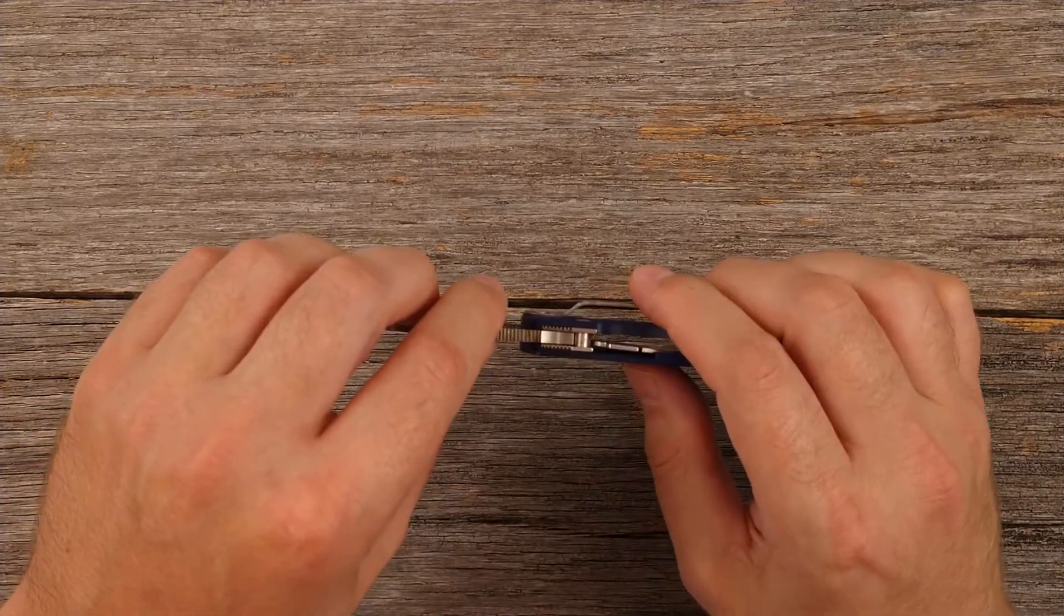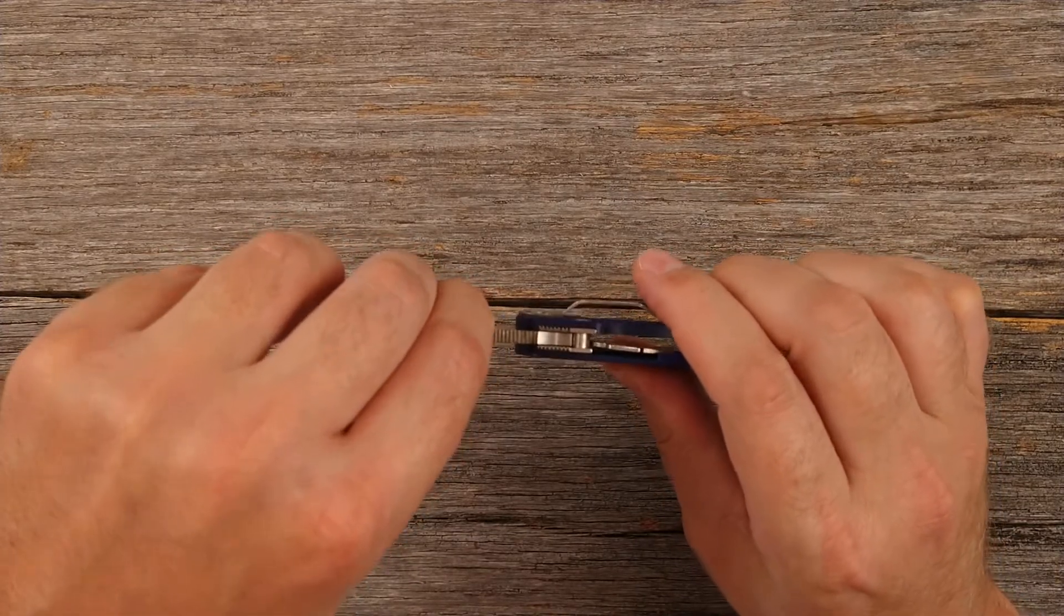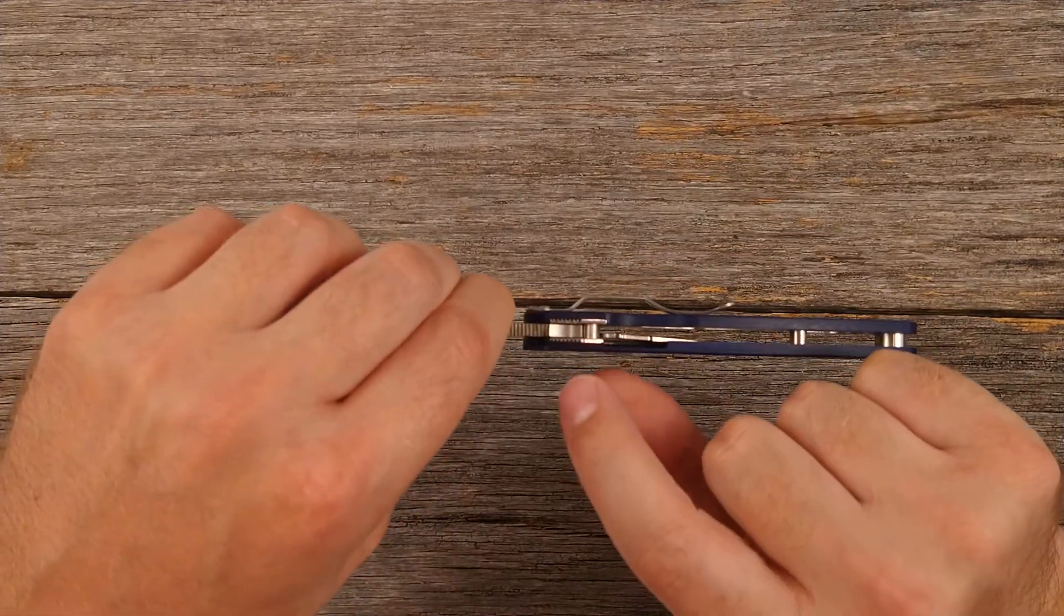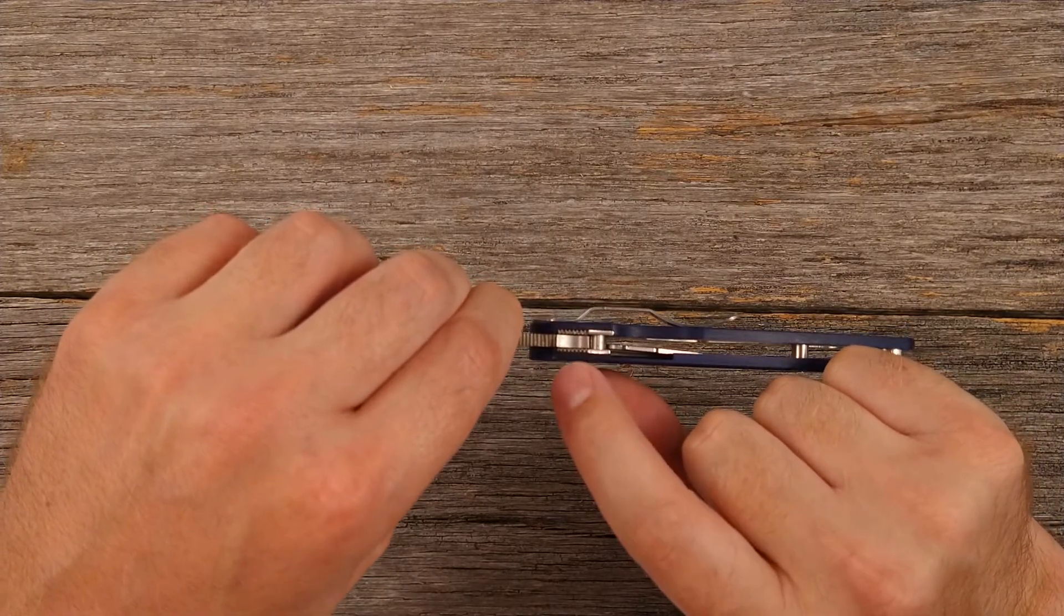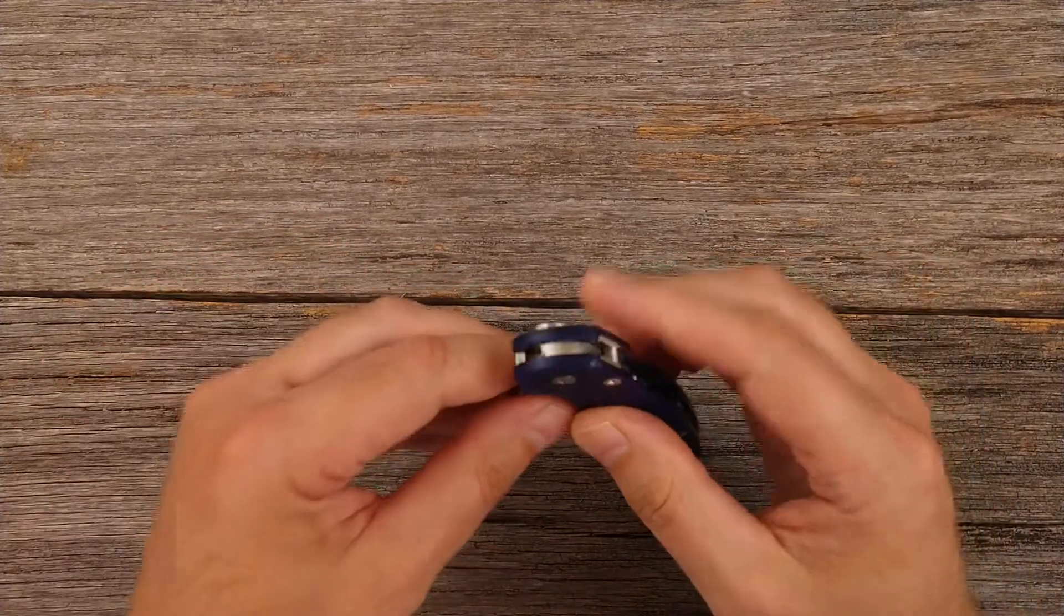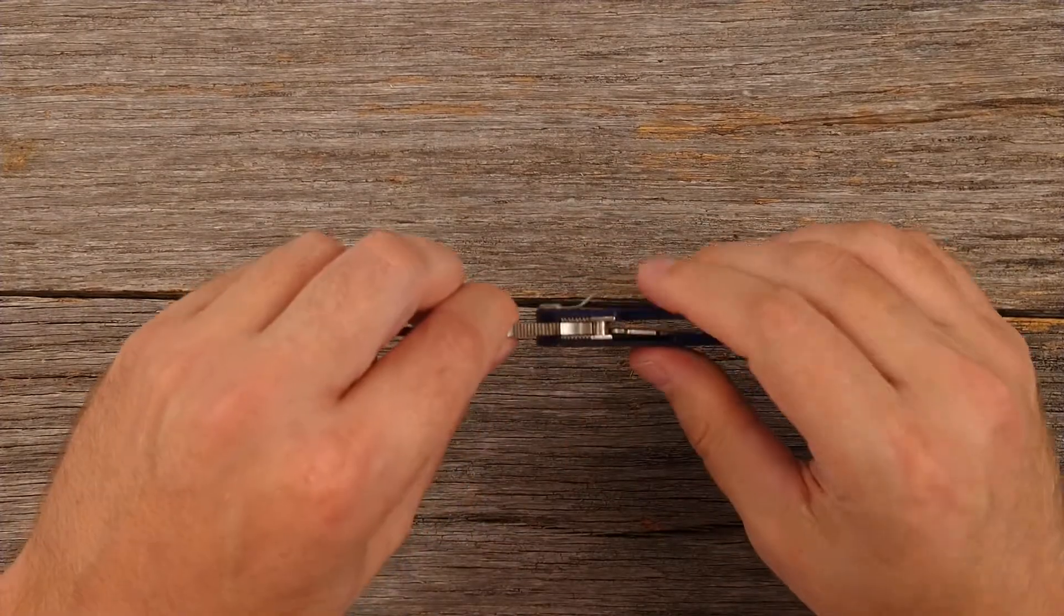And that's where the name compression lock comes in. Because if you try to close this thing, what it's doing is it's actually compressing or trying to compress that liner, which obviously is very difficult, if not near impossible to do. So it actually provides an extremely secure lockup.